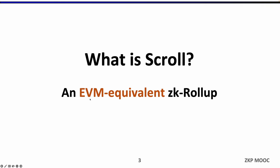with a higher throughput. More specifically, we are building an EVM-equivalent ZK rollup. We are building a ZK rollup solution — it's considered to be the most secure scaling solution based on zero-knowledge proof. We can support EVM inside our ZK rollup, not only a specific smart contract language like Solidity, but we can achieve a deeper level of compatibility at the EVM bytecode level, supporting all the tooling around it directly. So if you are a contract developer, the development experience on Scroll will be exactly the same as Ethereum.